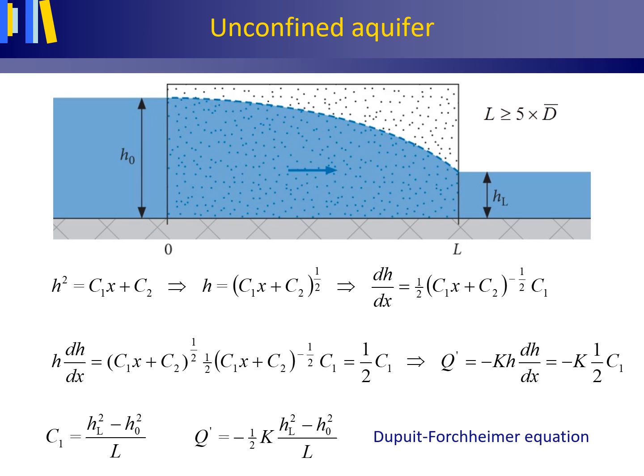From inserting the boundary condition, we know C1 as stated here. Inserting this C1 gives the Dupuit-Forchheimer equation.